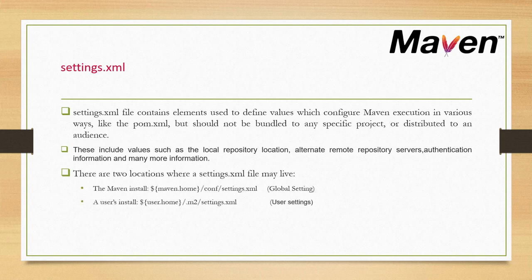These include values such as local repository location or path, alternate remote repository servers, authentication information, and much more. There are two locations where a settings.xml file may live. First, in the Maven installation directory — once you configure Maven and run any Maven goal, a .m2 directory gets created in your user home directory. You can copy the settings.xml from the Maven installation directory's conf folder into that .m2 directory for user-specific configuration.